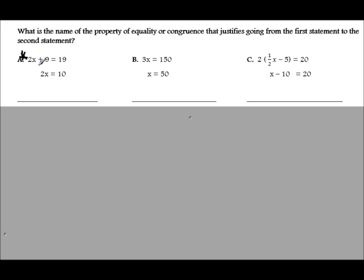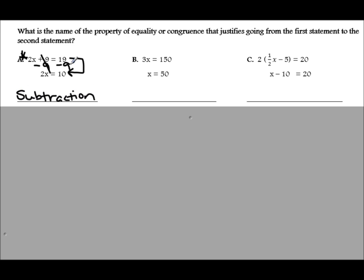If this was your original equation and you were asked to solve for x, your first step would be to subtract 9. You would be left with 2x equals 19 minus 9, which is 10. So how did the first step become the second step? The subtraction property allowed you to go from the first step to the last step.